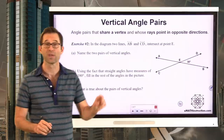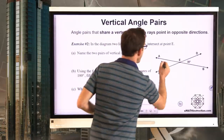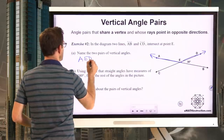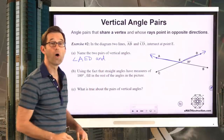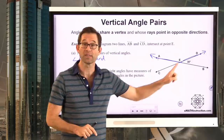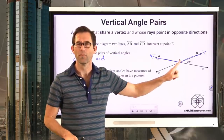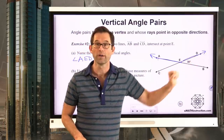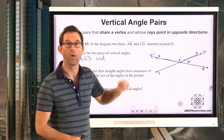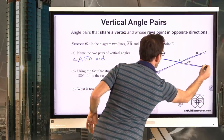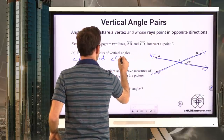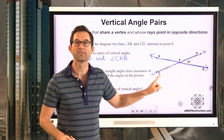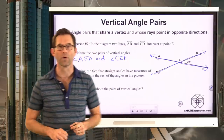Let me pick one angle — angle AED. What angle will be vertical to that? It'll share vertex E, but whose rays point in the opposite direction. This ray points in the opposite direction of this one, and this ray points in the opposite direction of that one. So the vertical angle pair is angle AED and angle CEB. They call them vertical angle pairs because it's almost like one angle sitting on top of the other.